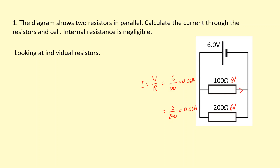So these are the currents flowing in these two branches: 0.06 amps and 0.03 amps. Because at this junction the current is going to join back together, it's going to be 0.09 amps flowing through this and through the cell. And similarly here, 0.09 amps through this.